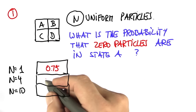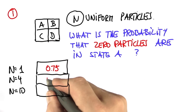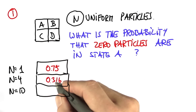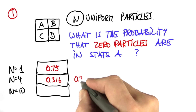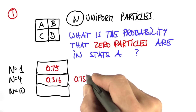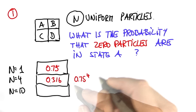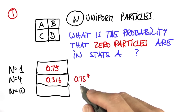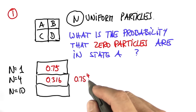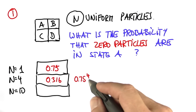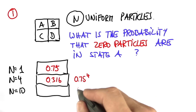For n equals 4, it's 0.316, which is the same as 0.75 to the fourth. For each particle, we have a 75% chance to be outside a, so 0.75 to the fourth gives the chance all four particles are outside a.